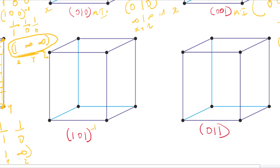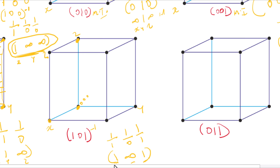For (101), Miller indices reciprocal: one over one, one over zero, one over one gives us 1, infinity, 1. This is our X, Y, Z. Always put the brackets. On the X axis we have positive one. Y is infinity so the plane is parallel to Y. Our Z is also one. Since it is parallel to Y, we connect X and Z points — this is our plane.